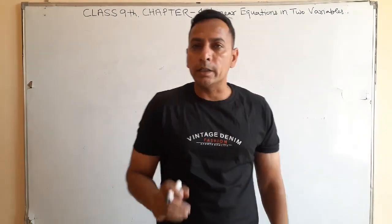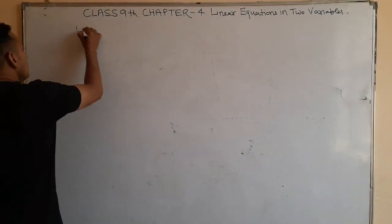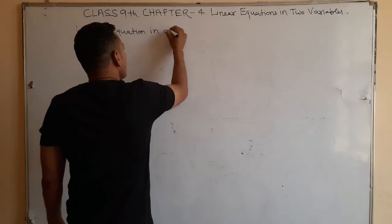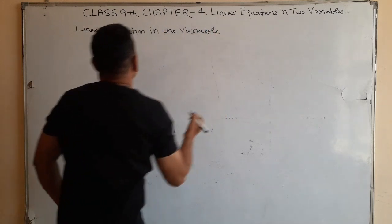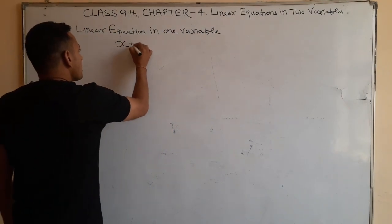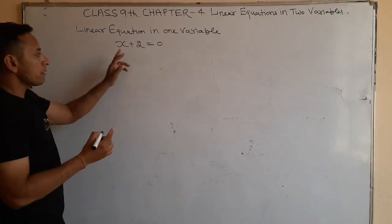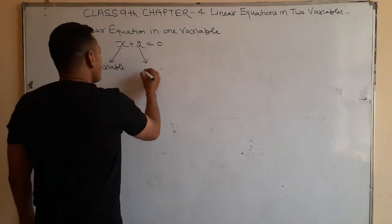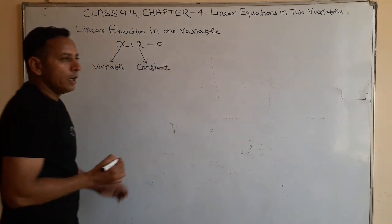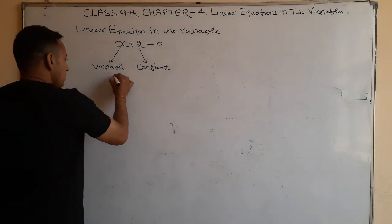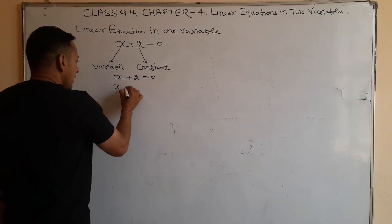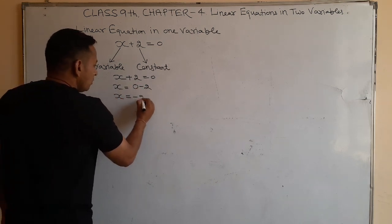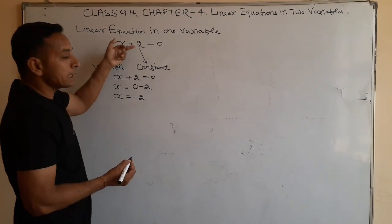Now we take some examples of linear equations in one variable. Linear equation in one variable: x plus 2 is equal to 0. This is a linear equation in one variable. Here x is the variable and 2 is the constant term. To find the solution, we transpose 2 to the right hand side: 0 minus 2, and we get x is equal to minus 2.